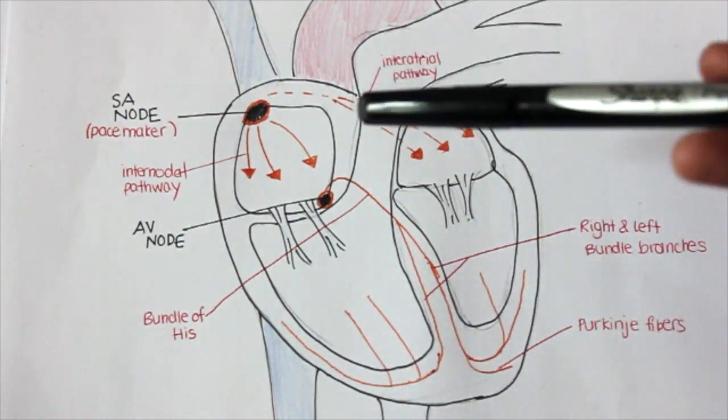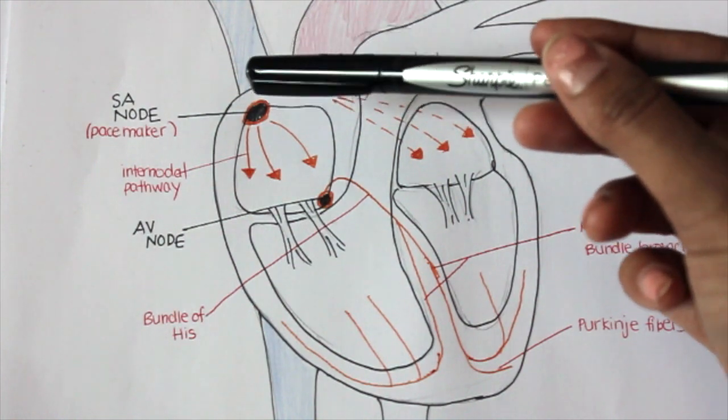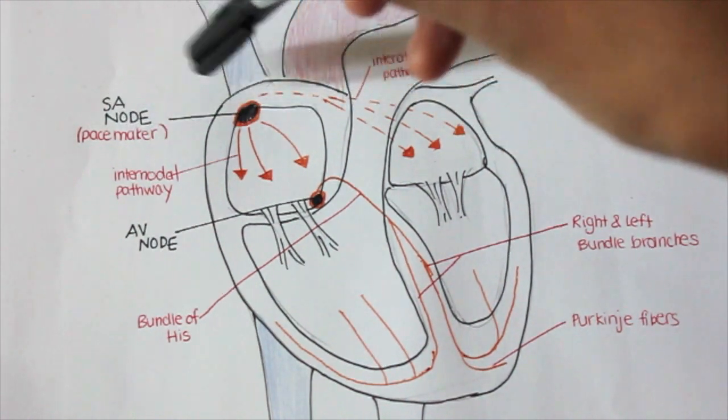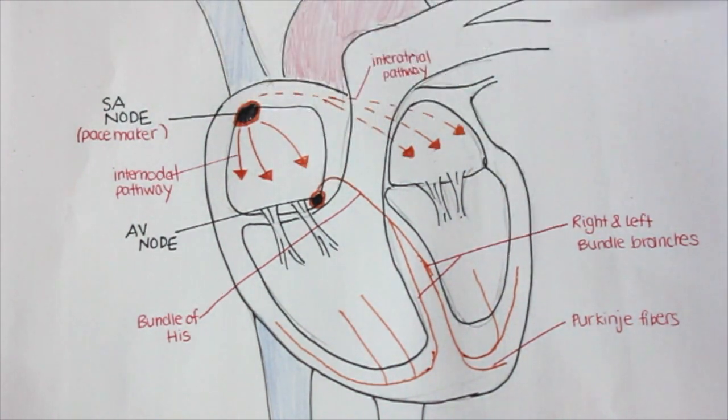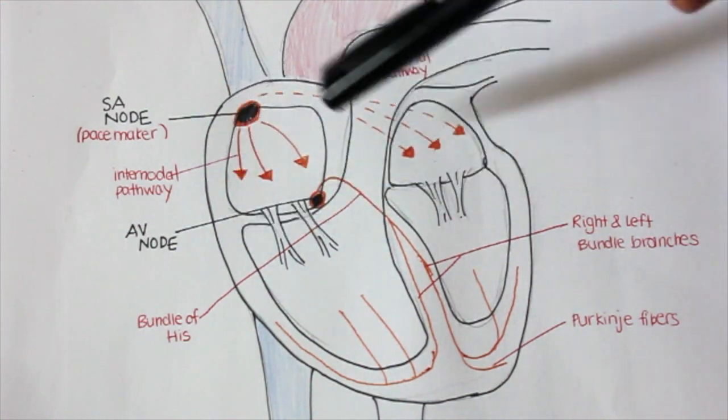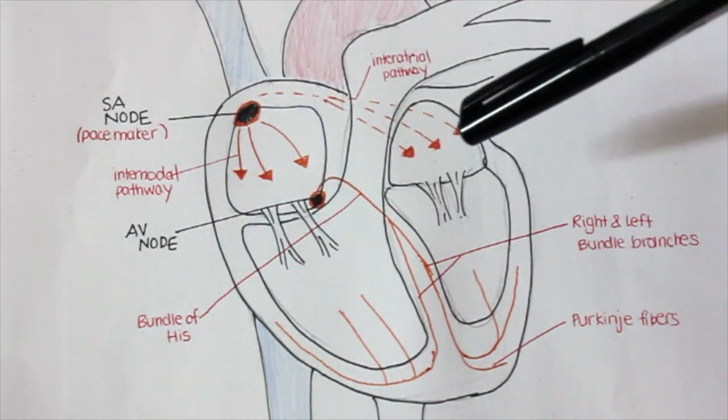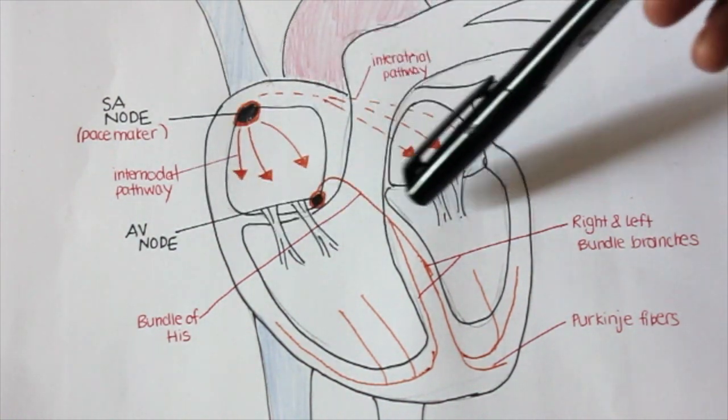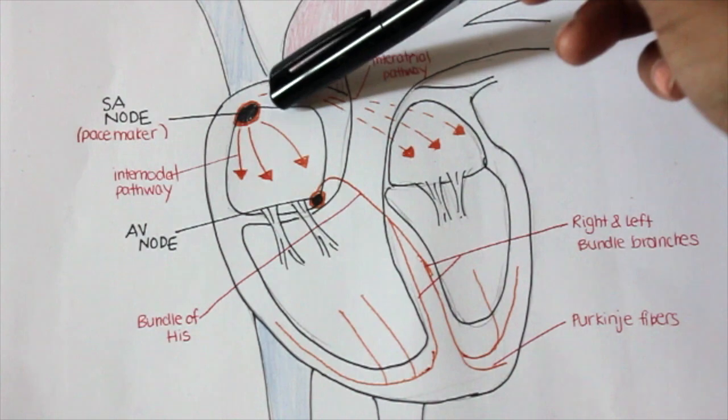An impulse is initially conducted at the SA node, which is known as the pacemaker and sets the beat for the heart. This impulse then travels down the internodal and interatrial pathways so that it can reach both atria and help in their contraction.